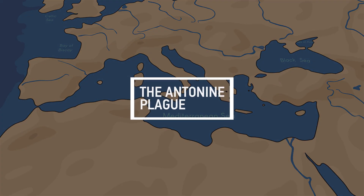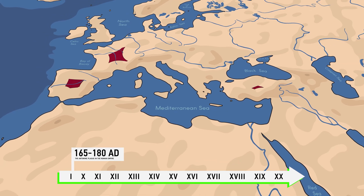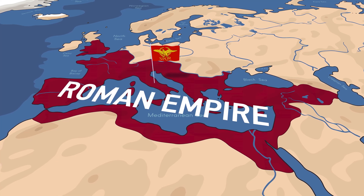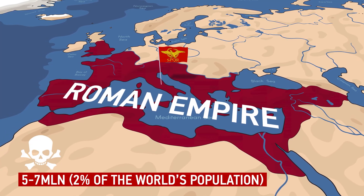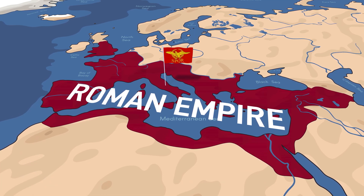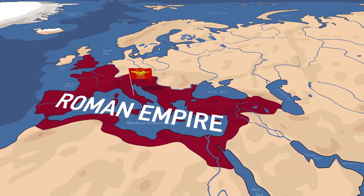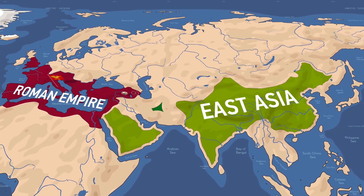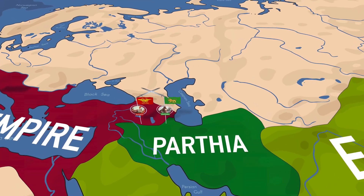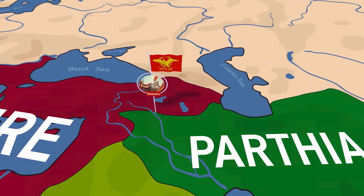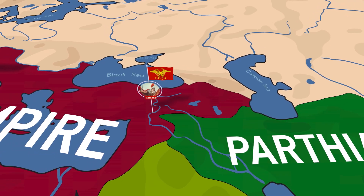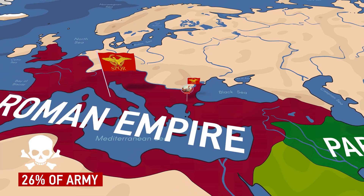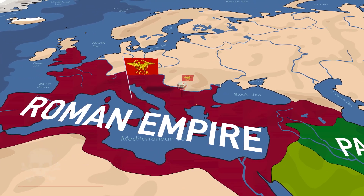In 165, the Antonine Plague broke out in the Roman Empire and raged until 180. This disease took the lives of about five to seven million people, which accounted for about 2% of the world's population at the time. Most likely it was common smallpox, native to China or East Asia. At this time, the Romans actively fought with Parthia, whence this disease came. The infected warriors returned home and spread the disease; the Eastern Roman legions lost 26% of their strength, significantly weakening the empire's military power.